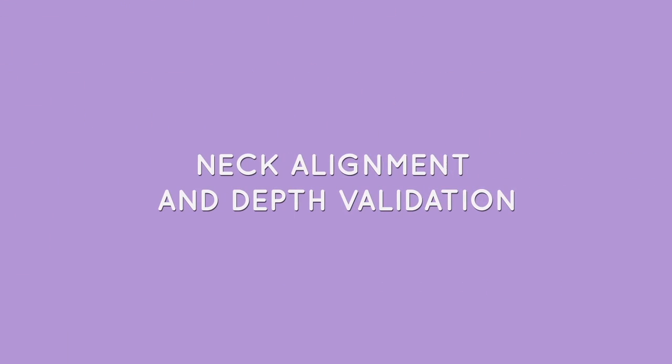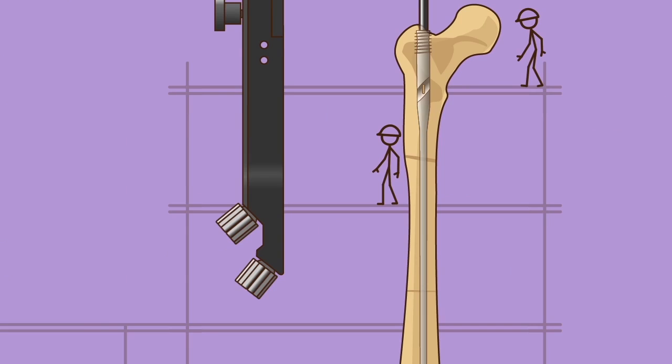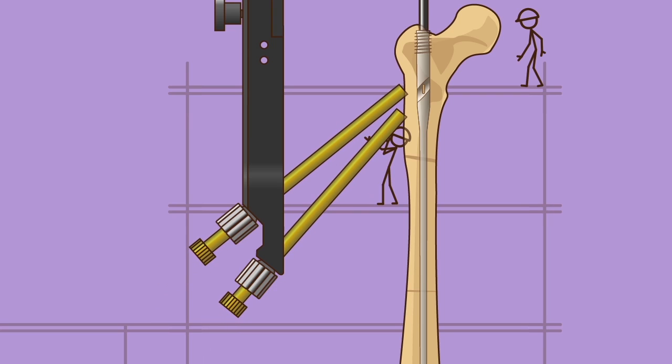Neck alignment and depth validation: insert the two depth gauge sleeves through the lag attachment and secure them using the compression rings. Insert the two depth gauge wires into the femoral neck and head to the desired depth. Check the gauge wire's placement in both the AP and lateral views. Depth gauge wires should be centered within the femoral neck.